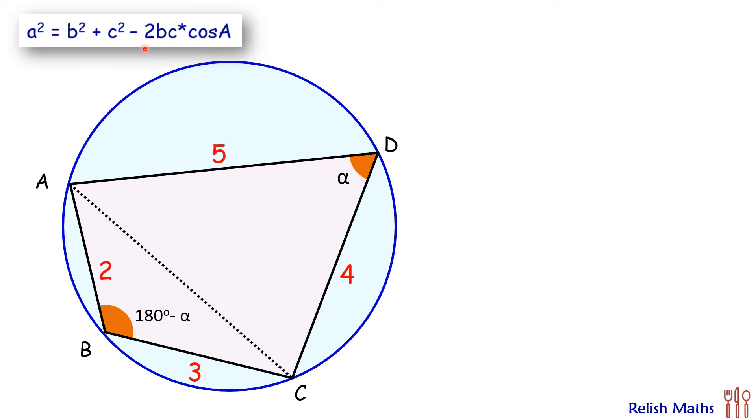Using this cosine rule in triangle ADC, we get AC² = 5² + 4² - 2 × 5 × 4 × cos α. Simplifying, we'll get our equation in this form.